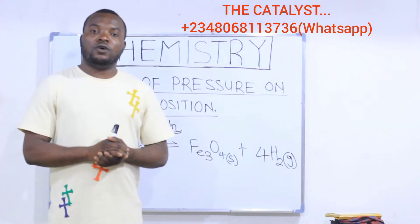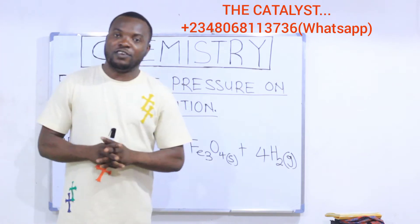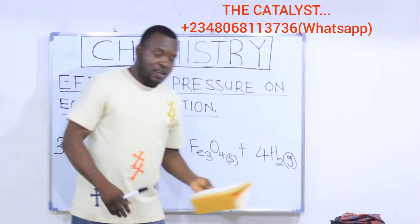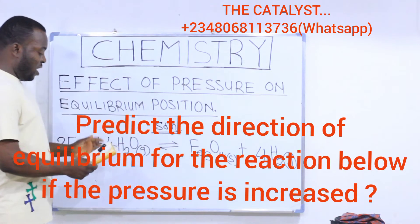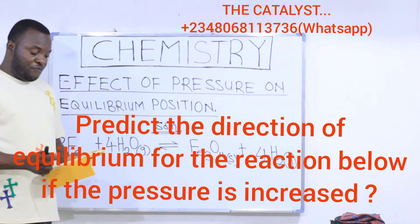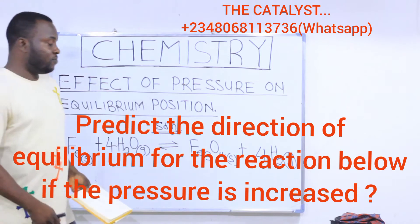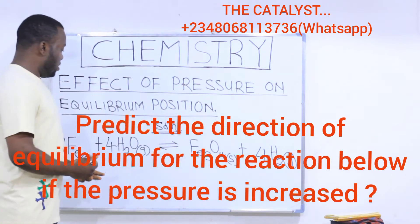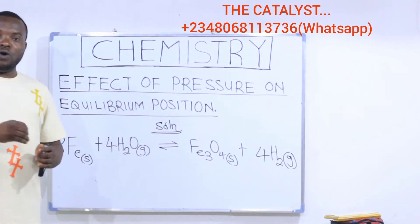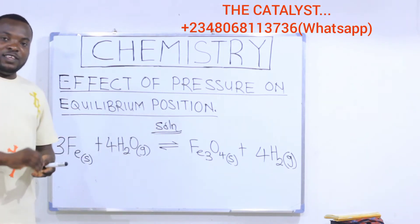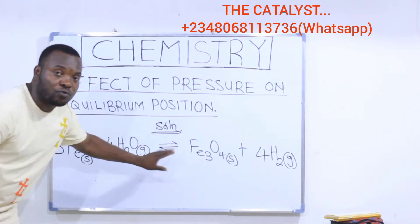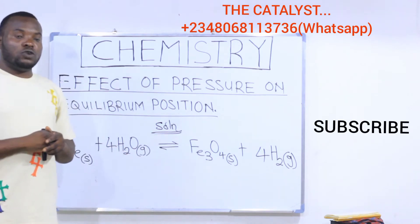The effect of pressure on the equilibrium position of a reversible reaction. Let's take a look at this question. The question says: predict the direction of equilibrium position for the reaction below if the pressure is increased. Let's solve this problem. We have been given an equation and the question asks us to predict the direction of equilibrium position if the pressure of this equilibrium reaction is increased.